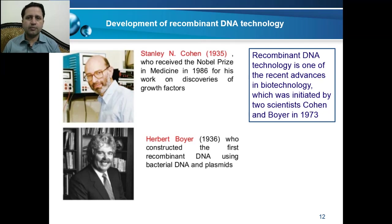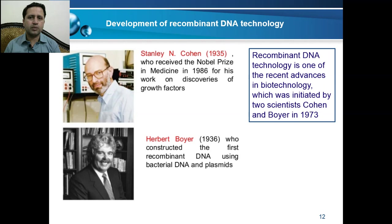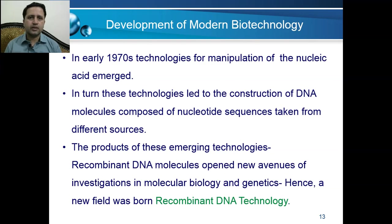Two scientists, Stanley Cohen and Herbert Boyer, introduced recombinant DNA technology. Stanley Cohen received the Nobel Prize in Medicine in 1986 for his discoveries of growth factors, and Boyer constructed the first recombinant DNA using bacterial DNA and plasmids. In the early 1970s, technologies for the manipulation of nucleic acids emerged because of the discoveries of Cohen and Boyer. These technologies led to the construction of DNA molecules composed of nucleotide sequences taken from different sources, and this combined product was called recombinant DNA — giving rise to recombinant DNA technology.